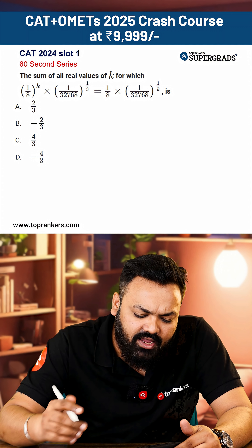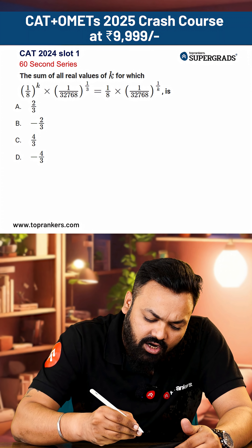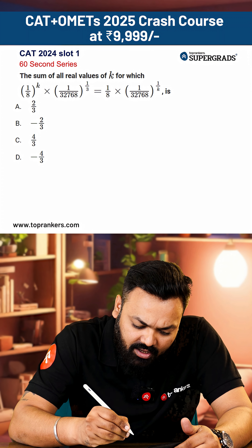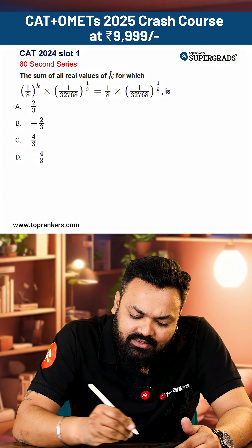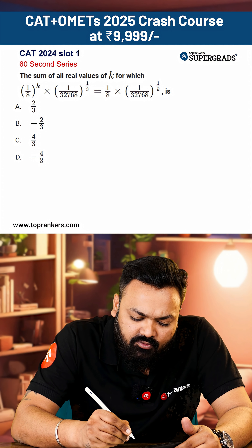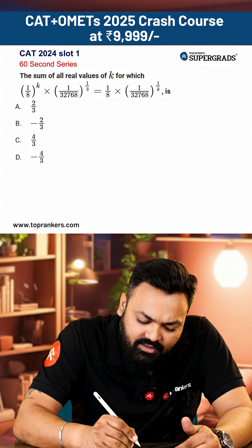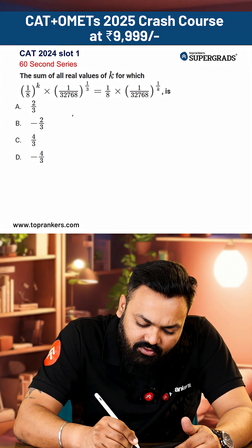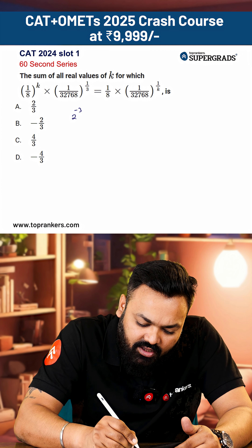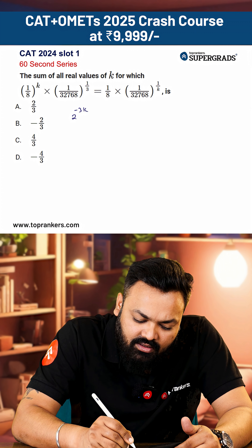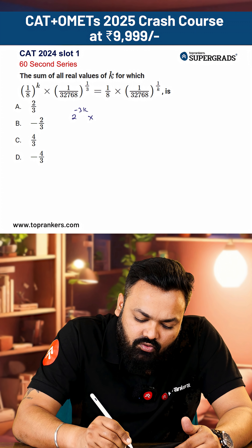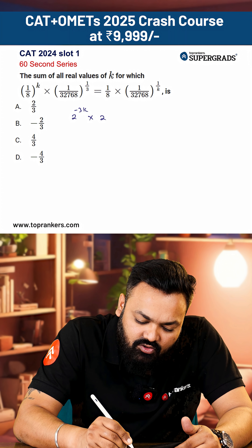In this question, 1 upon 8 raised to the power k equals 2 to the power minus 3k. This simplifies to 2 to the power minus 15.